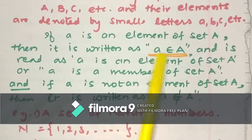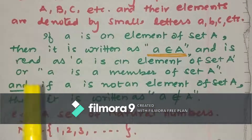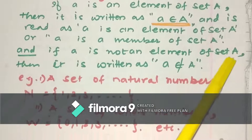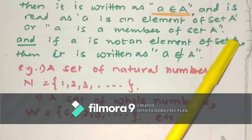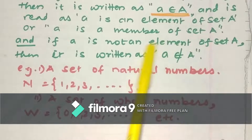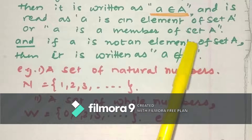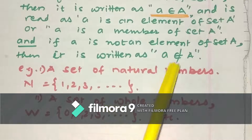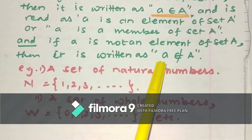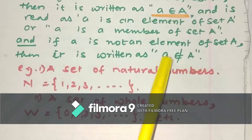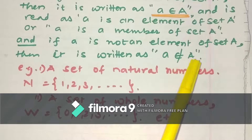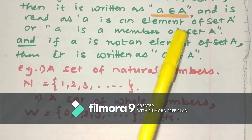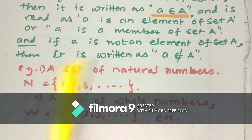And if a is not an element of the set A, we denote it by this symbolic notation — just put a cross line on the belongs-to sign. That represents that the element a is not in A, element a is not belonging to set A. So that is the very important notation: belongs to and not belongs to a set.